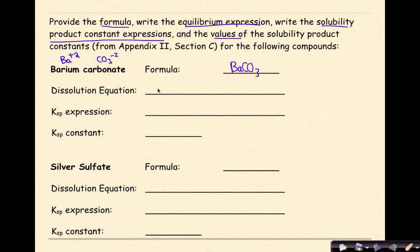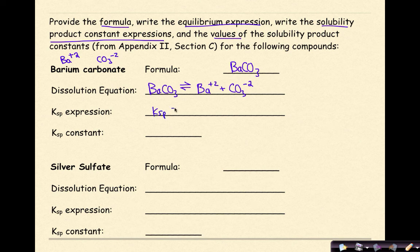For the dissolution equation: BaCO3 with a double arrow, then Ba²⁺ plus CO3²⁻, showing it dissolves to some extent. The KSP expression is: KSP equals the concentration of Ba²⁺ times the concentration of CO3²⁻. Looking up the KSP in the textbook gives 2.58 times 10 to the negative 9.